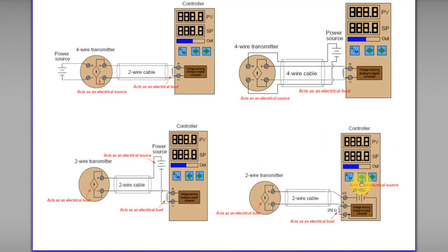Obviously, this transmitter and controller will both act as electrical loads. How about this one? If you observe carefully, the wire is actually connected to positive V — which is the positive voltage source. This is internally connected to the controller's internal power source. So this controller, in this case, acts as an electrical source to power up the whole loop. The power source will power the transmitter, so this transmitter acts as a load. And then we come to this positive and negative terminal here, and there is a load here. You may ask: how come there is a resistor here acting as a load? Is it okay to connect the wire from positive V to the transmitter, then back to the negative terminal? No.